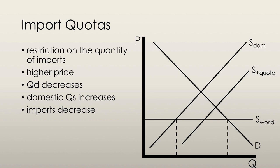If the import quota is 5 units per year, then every point on the new supply curve will be 5 units to the right of the domestic supply curve. The new equilibrium price and quantity is at the point where the new supply curve intersects the demand curve.